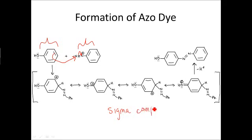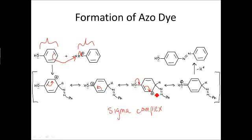The sigma complex gets this special name because the ring used to be aromatic but is no longer aromatic — it lacks a pi bond and bears a positive charge. However, the remaining pi bonds allow it to participate in resonance stabilization. The alcohol group off the former benzene ring can also participate in resonance stabilization, with pi bonds shifting through the structure.